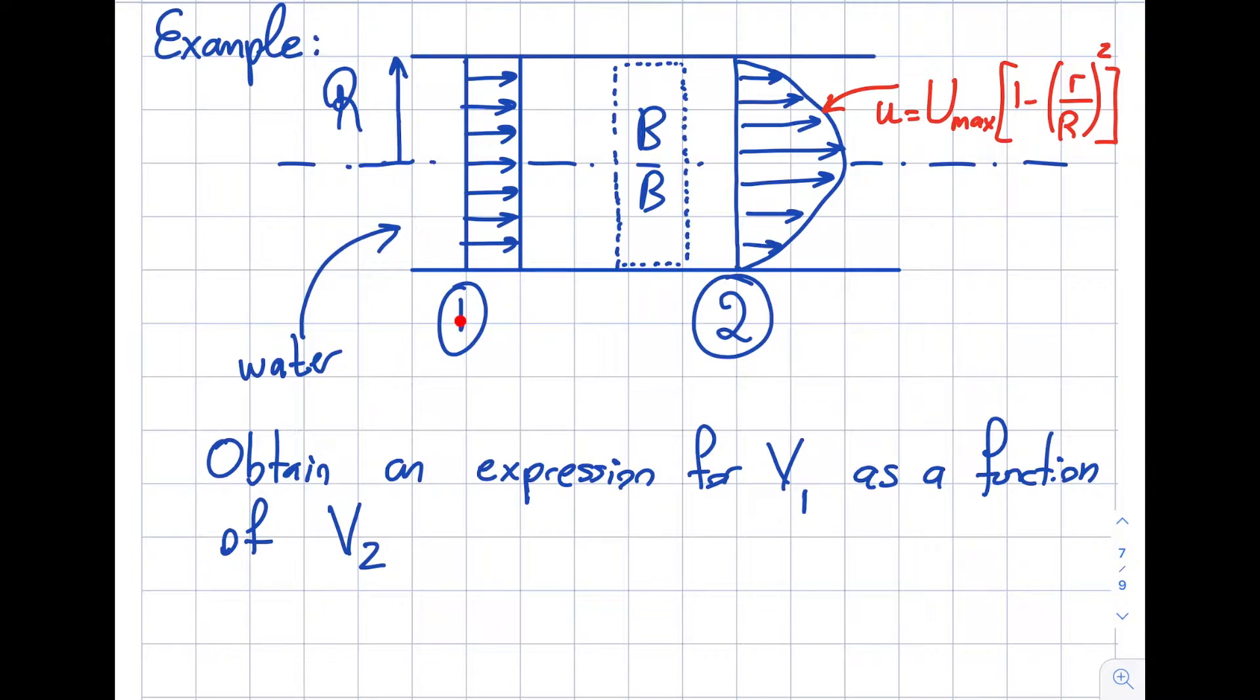So look in here. What happens is that at section number one, this is the flow direction, the velocity is uniform. It's given as V1, a constant velocity. Then there is this black box and after this black box the flow comes out like this. It's a parabola and the velocity profile is given as this U. Let's discuss this. U will be U_max times, it's kind of weird, right? 1 minus R over capital R square.